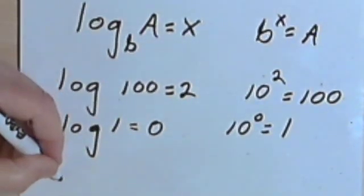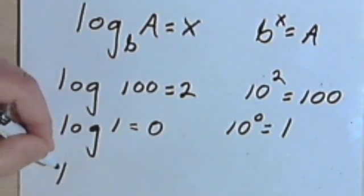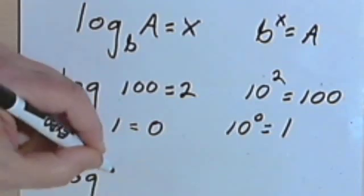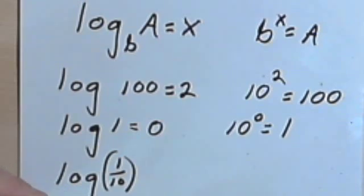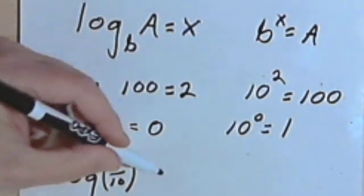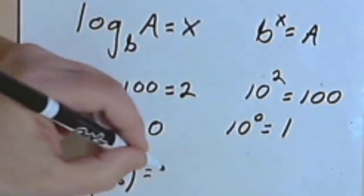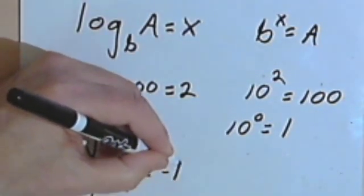Let's try a fraction. Let's see, can we do this? The log of 1 tenth. So I'm assuming this is the log of base 10. And I'm writing 1 tenth in parentheses just so we know that I'm taking the logarithm of the whole thing. And that's going to equal negative 1.